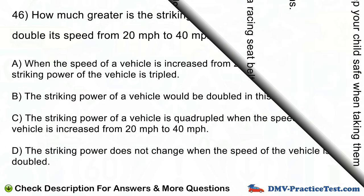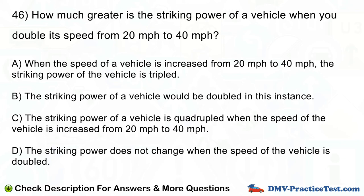Question number 46. How much greater is the striking power of a vehicle when you double its speed from 20 mph to 40 mph? A. The striking power of the vehicle is tripled. B. The striking power of a vehicle would be doubled. C. The striking power of a vehicle is quadrupled when the speed is increased from 20 mph to 40 mph. D. The striking power does not change when the speed of the vehicle is doubled.